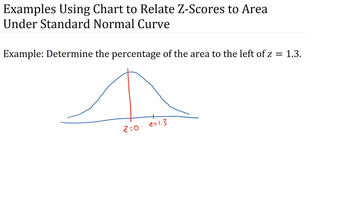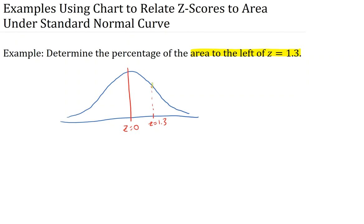And I want the area to the left of z equals 1.3. So what that means is I want the area, not just the area to the left of the mean, all of the area to the left of this z value.